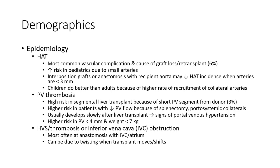Portal vein thrombosis has a high risk in segmental liver transplant because of the short portal vein segment from the donor, with an incidence of about 3%. Risk is also high in patients with decreased portal flow due to splenectomy. Portosystemic collaterals usually develop slowly after liver transplant.